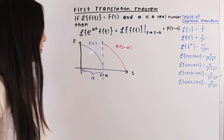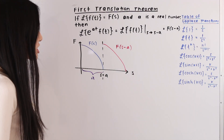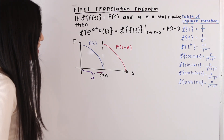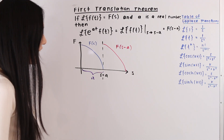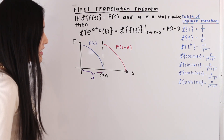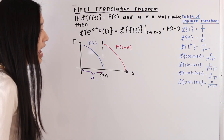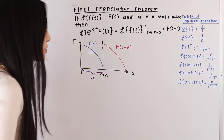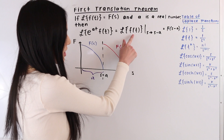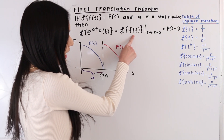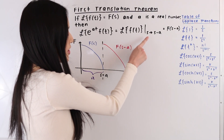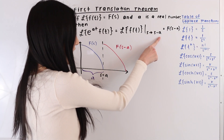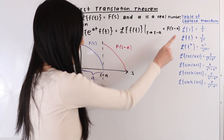The first translation theorem tells us that if the Laplace transform of f of t is equal to F of s, and a is a real number, then the Laplace transform of e to the at times f of t is equal to the Laplace transform of f of t with a shift from s to s minus a. Anywhere we see an s we replace it with s minus a, and we can rewrite this as F of s minus a.